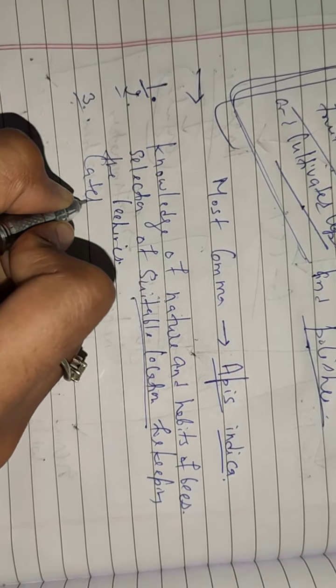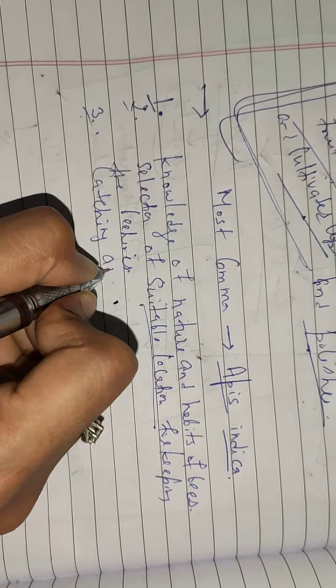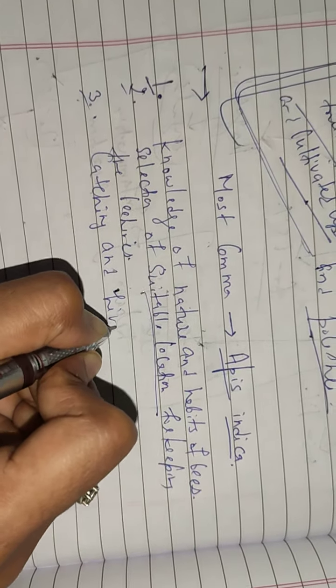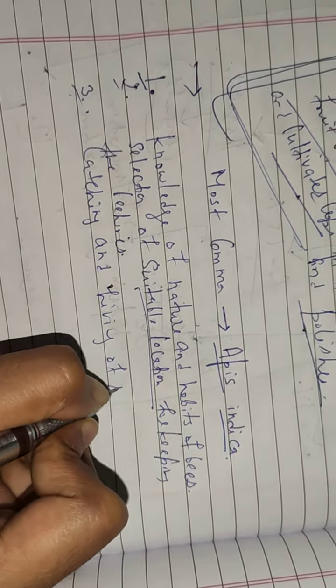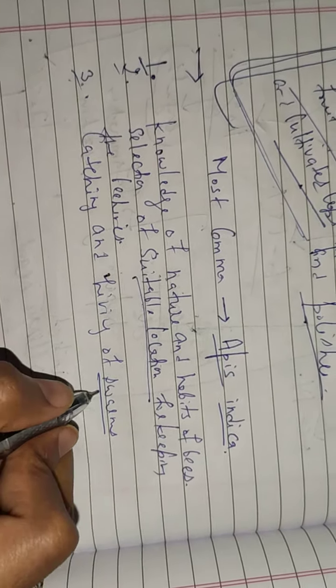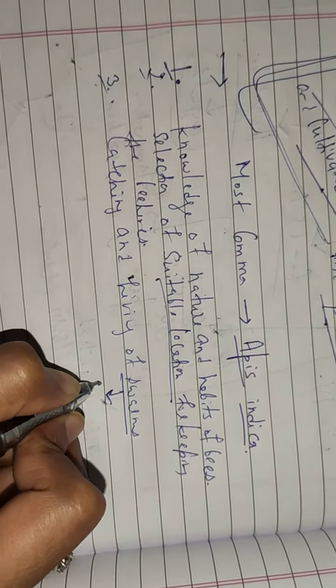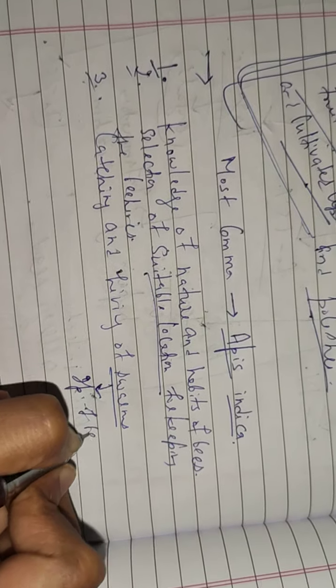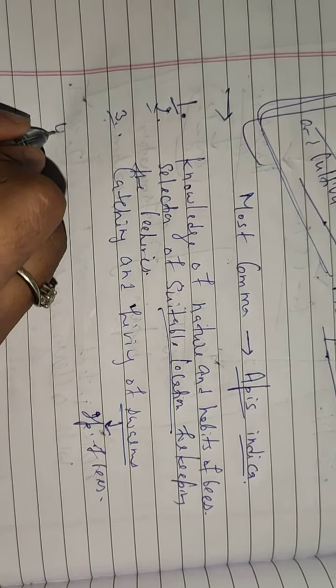After that, catching and hiving of swarms. Swarm is a group of honeybees. Third point is management of bee hives.